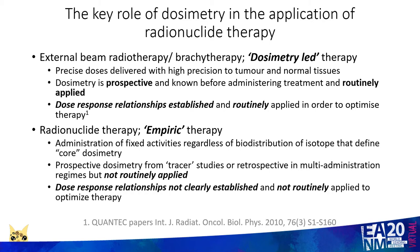If I compare this to radionuclide therapy, here I see treatment that is largely empiric. Administration of fixed activities of radionuclide are given regardless of the biodistribution of the isotope that defines the dosimetry in individual patients. Although dosimetry may be performed prospectively to give an idea of doses to normal tissues before treatment using tracer studies, more commonly it's available only following retrospective dosimetry studies in patients undergoing multi-administration regimes. In general, routine radiation dosimetry is not performed, and this combined with the complexity of the treatment means dose response relationships are not clearly established in radionuclide therapy and therefore not available to optimise therapy.